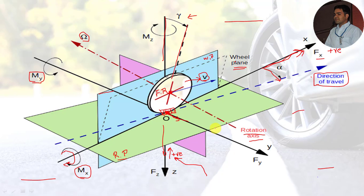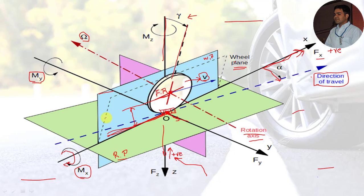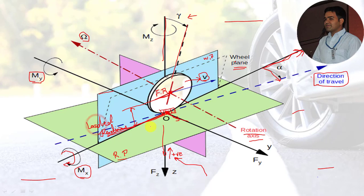One more term is loaded radius — the distance from the center of tire contact to the wheel center. One line indicates the center of tire contact and another line indicates the wheel center; the distance between these two is known as the loaded radius. That is what the SAE tire axis system covers.